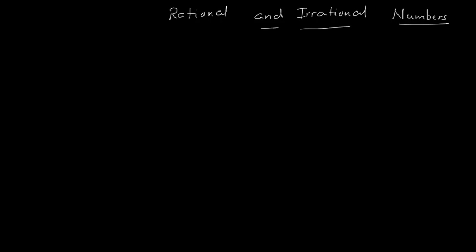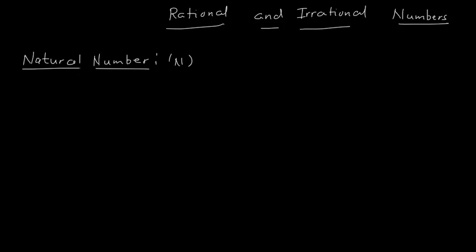We already know about natural numbers. Let us just revise. What is a natural number? The numbers which start with 1. We denote natural numbers with N, and the numbers are 1, 2, 3, 4 and so on. These are natural numbers.